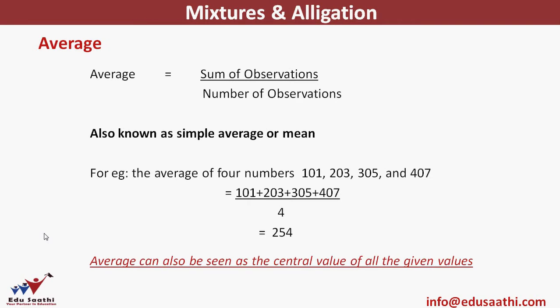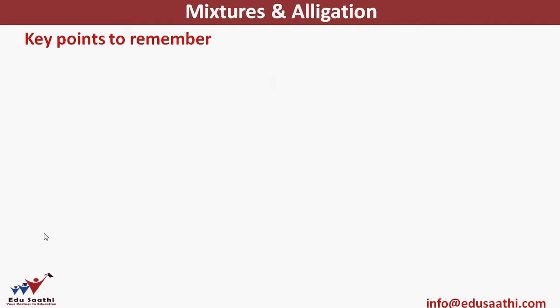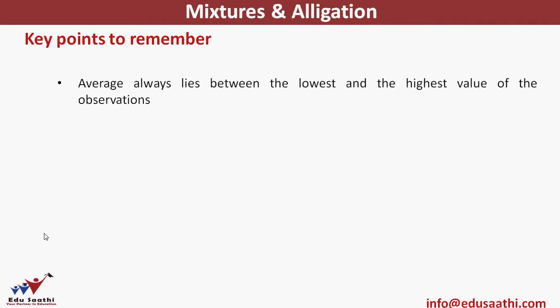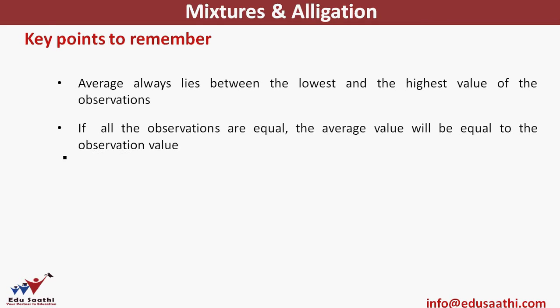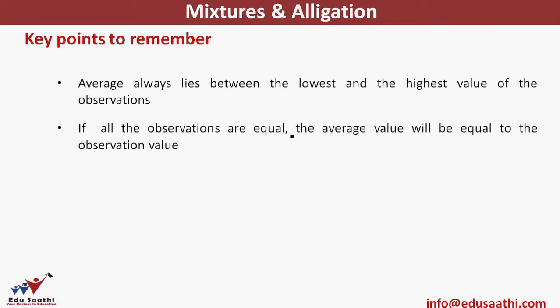This value can also be seen as the central value of all the given figures. The 4 given figures were 101, 203, 305, and 407. Very important points to remember when finding averages: first, the average will always lie between the lowest and the highest value. Average cannot be smaller than the lowest and cannot be more than the highest value in a set of observations. If all the observations are equal, the average will also be equal to that same value.